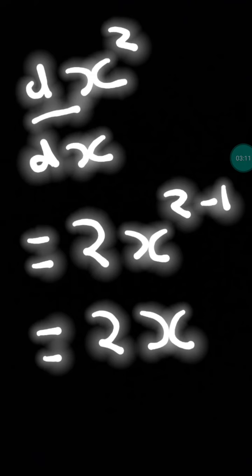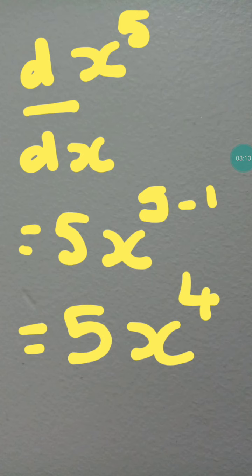Take a look at another example: d/dx of x to the power 5. This means what is the change in the value of x raised to 5 when there is a change in the value of x. Apply the formula without any thinking — it is 5 times x to the power 5 minus 1, that is 5x to the power 4.